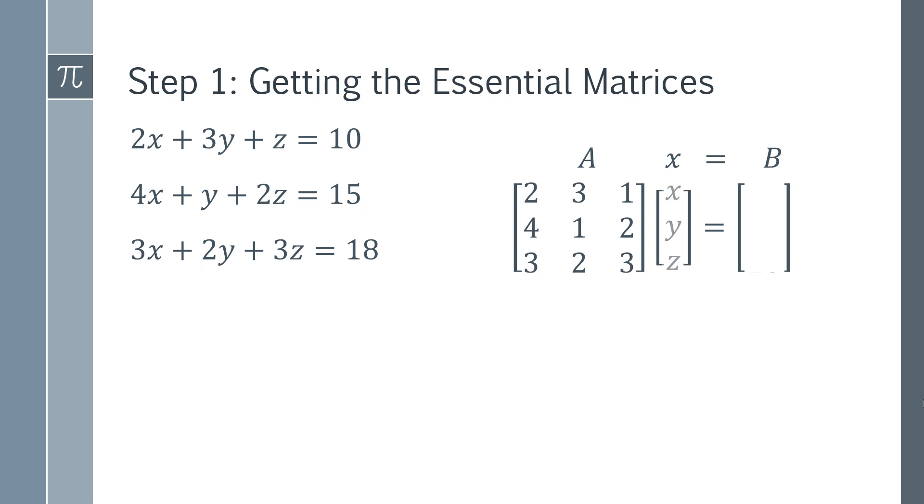That's going to be multiplied by a vector simply x, y, z. If you multiply that out using the matrix multiplication rules you'll get back to the left hand side. Then we're going to take our matrix B and that's just going to simply be the 10, 15 and 18.